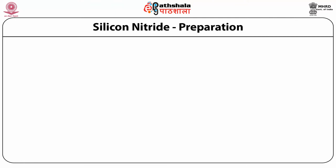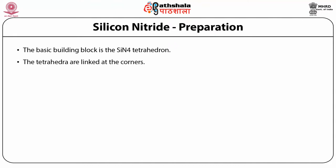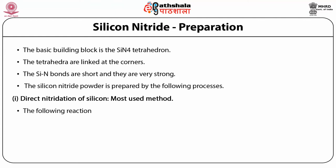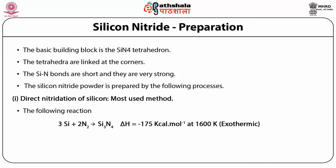The basic building block of the structure of Silicon Nitride is the SiN₄ tetrahedron. The tetrahedra are linked at the corners, and the silicon-nitride bonds are short and very strong. Silicon Nitride powder is prepared by several processes. The first is direct nitridation of silicon, the method most used in commercial practice: 3Si + 2N₂ → Si₃N₄, where ΔH = −175 kcal/mol at 1600 K, making it exothermic.